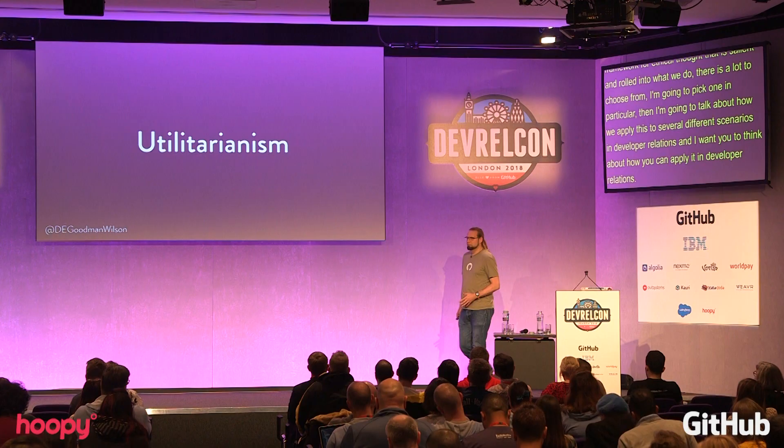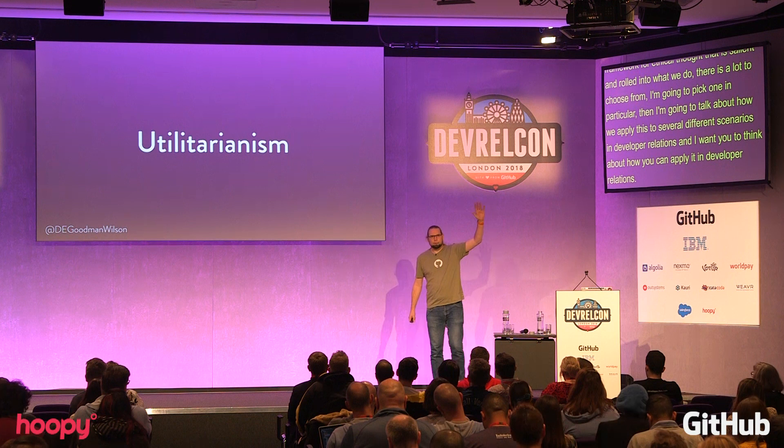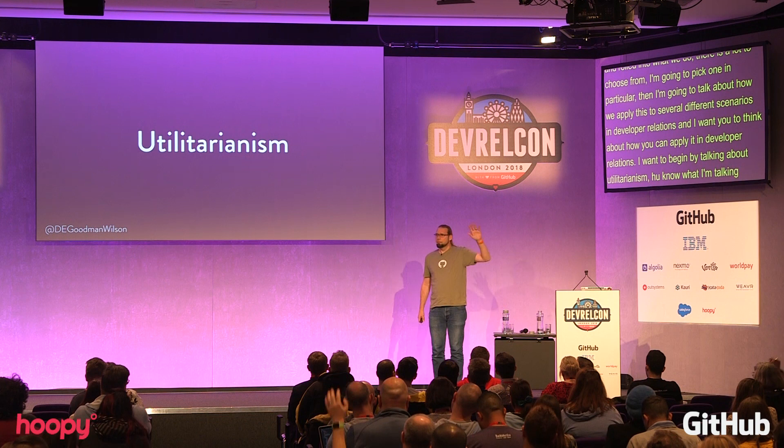And so I want to begin by talking about utilitarianism. Another name for it is consequentialism. Utilitarianism is a class of ethical theories based on the principle that what's right maximizes utility and minimizes disutility. And depending on which theory you subscribe to, it's going to cash out maximization and utility in different ways. Maybe utility is happiness. Maybe utility is pleasure. If you're an economist, utility is money. Maximization might just be for you personally, it might be in a local community, it might be global maximization.